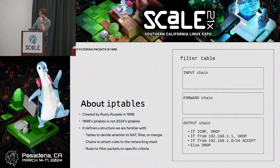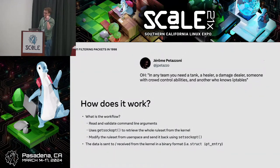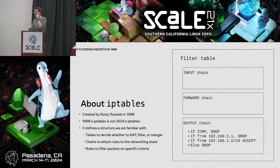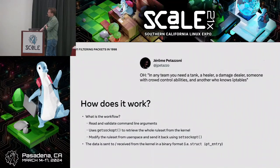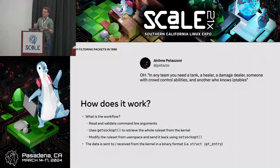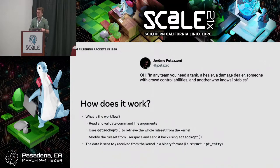The workflow is quite simple: you call the IP tables binary and give it parameters. If you want to create a new filtering rule, IP tables will first use getsockopt to get the whole rule set from the kernel, modify it, and send it back using setsockopt. That's a quite heavy process — if you have to insert a thousand rules, it's going to call getsockopt a thousand times, get the whole rule set, modify it, and send it back. It can be quite inefficient for huge rule sets.